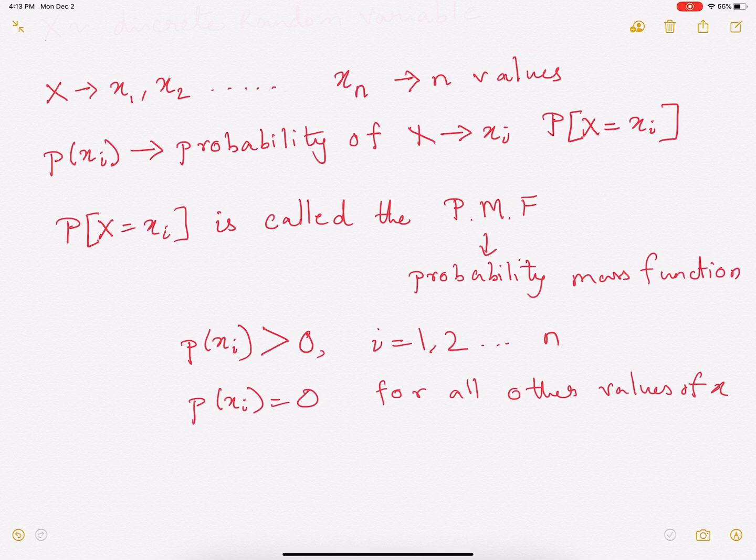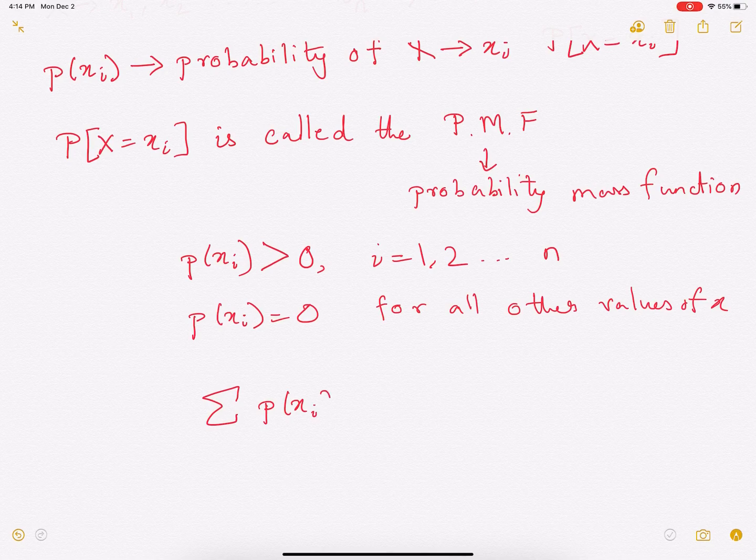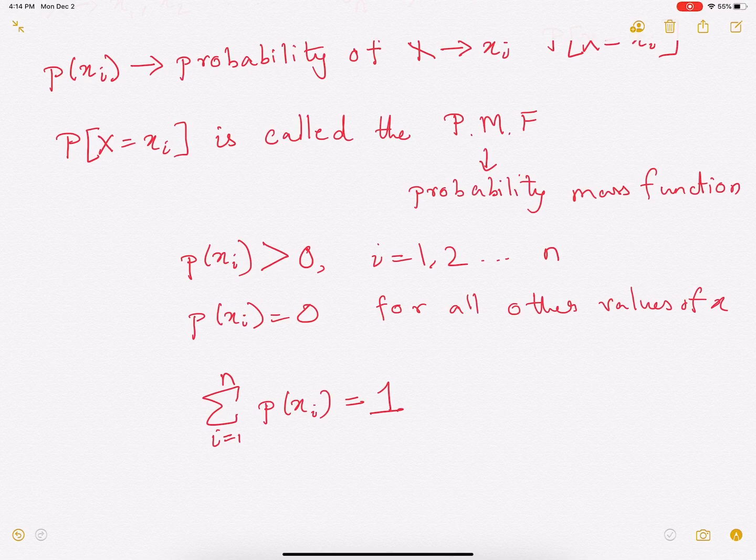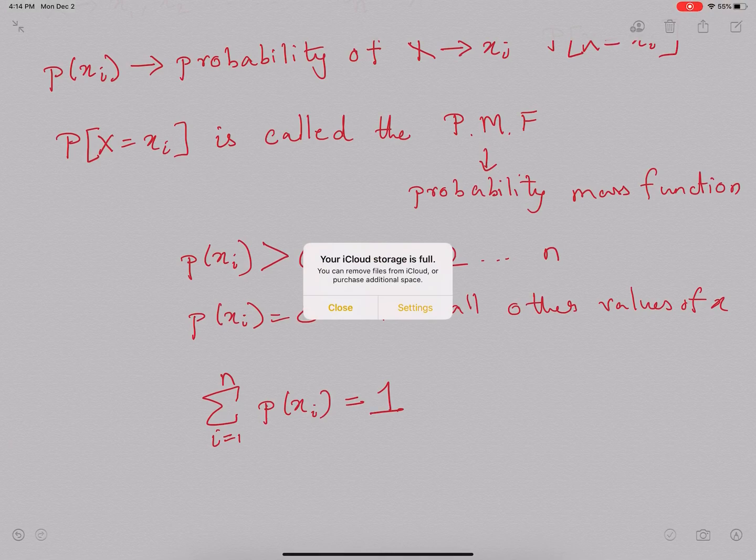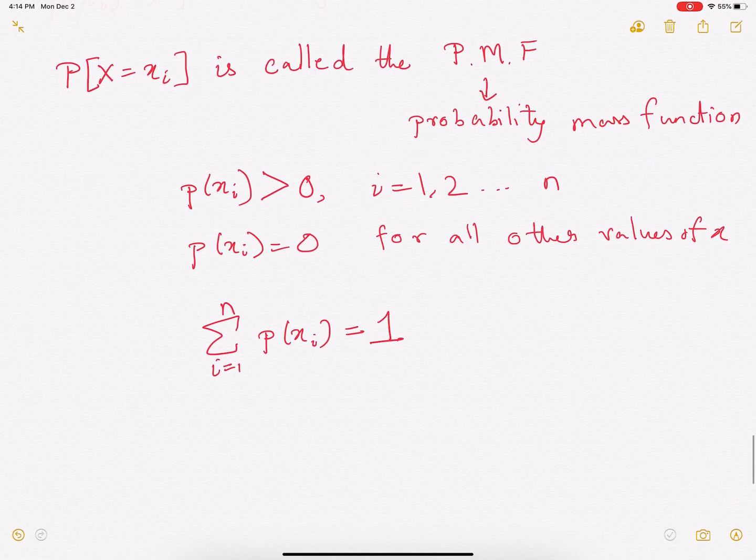Now as x is a random variable, all the probabilities should add up to 1. So essentially, we have probability of xi, i going from 1 to n should add up to 1. So this is called the probability mass function.